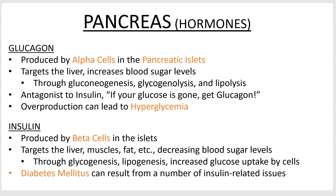Glucagon is an antagonist to insulin, which lowers blood sugar. A way to remember what glucagon does: if your glucose is gone, get glucagon — that's the marketing campaign for it. If you have too much glucagon, you'll have too much sugar, which is called hyperglycemia — 'hyper' means too much, and 'glycemia' implies sugar.